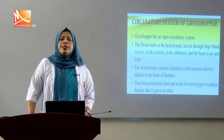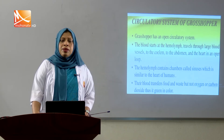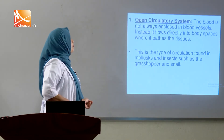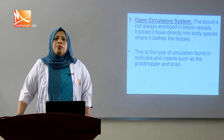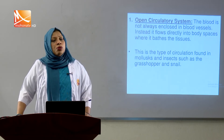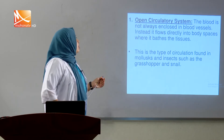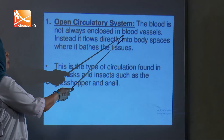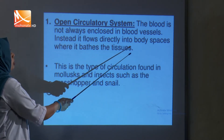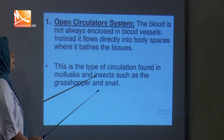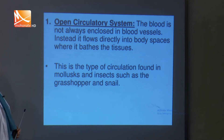Blood transfers food and waste but not oxygen or carbon dioxide, because blood has no respiratory pigment to carry respiratory gases. The blood circulatory system in animals is of two types: open circulatory system and closed circulatory system. In the open blood circulatory system, blood is not confined only in blood vessels or the heart. Rather it comes out from the blood vessels, enters the coelom, and bathes the tissues. This type is found in mollusks and insects such as grasshopper and snail.